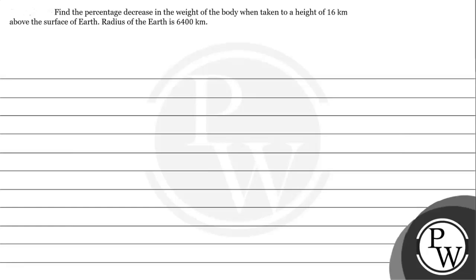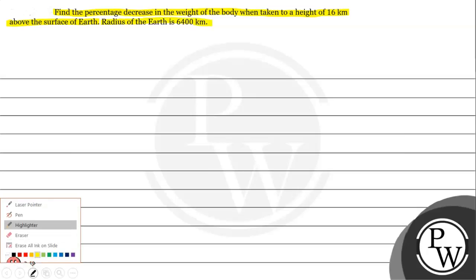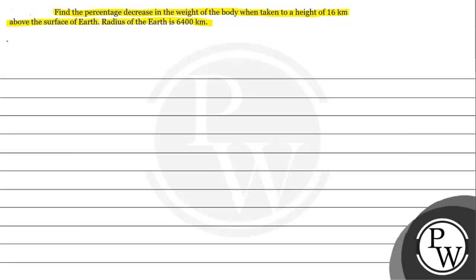Let's read the given question. We need to find the percentage decrease in the weight of a body when taken to a height of 16 kilometers above the surface of the Earth. The radius of Earth is given as 6400 kilometers. To understand this question, we need to understand the concept of variation of g with height.